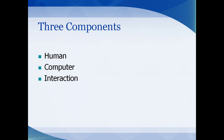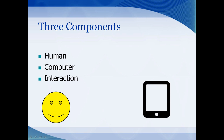The three components of HCI: obviously one is the human and then the computer, but the goal of HCI is to improve this interaction between the user and computers by trying to make computers more user-friendly.